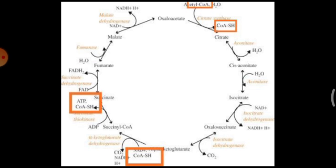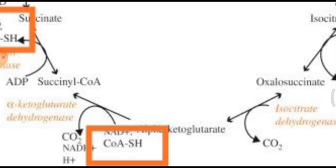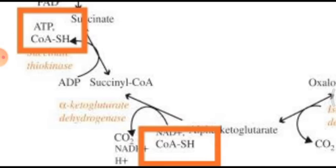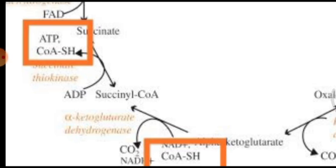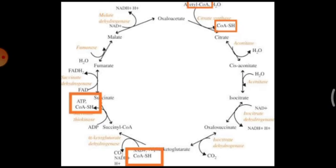In this slide you can see the Krebs cycle or citric acid cycle, where coenzyme A is involved with acetyl-CoA at the beginning, and then getting released during the first step, along with the coenzyme adding to form succinyl-CoA. That succinyl-CoA later, with release of CoA, is converted to succinate. These are the CoA-involved steps of the Krebs cycle.